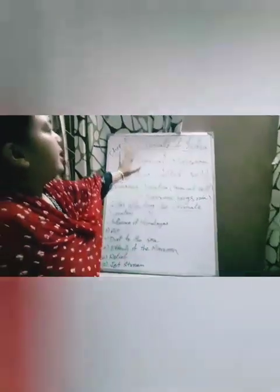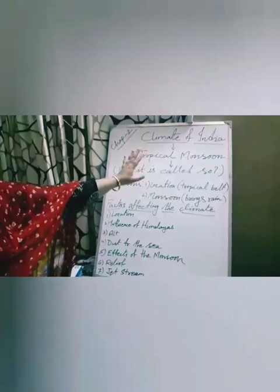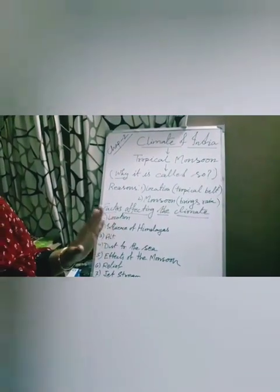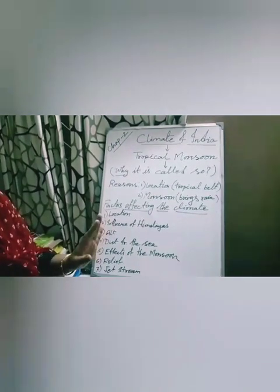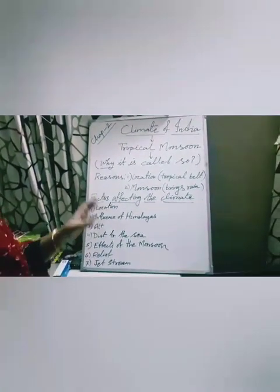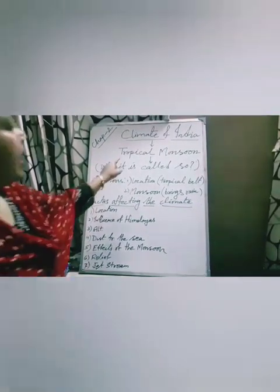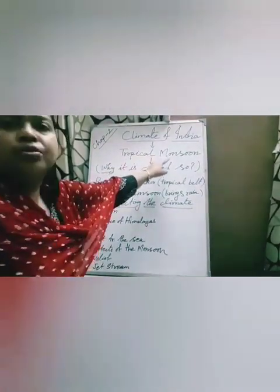Today I am going to start our fourth theory chapter, that is Chapter 2: Climate of India. Climate of India — we can tell that every year we can see that variation. But if we want to explain it in one sentence, India has tropical monsoon climate.